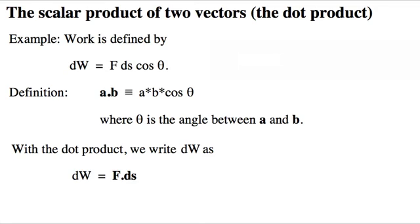Here's a simple example. A vector dot itself. a dot a equals a times a times cos zero, which is a squared. So, the scalar product of a vector with itself is the square of its magnitude.